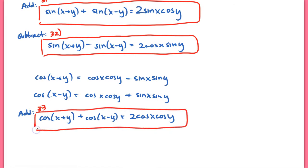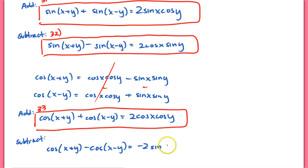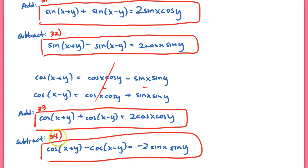One step closer. Now for the difference: subtracting the lines to rewrite the difference of our two cosine functions as a product. The cos x cos y terms cancel this time, and I have negative sin x sin y minus another sin x sin y, giving me negative 2 sin x sin y. This is our 34th and final identity of our Prove-It Notes.